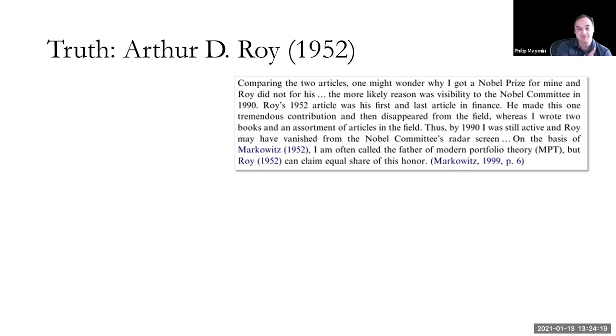And Markowitz later reflecting on it says, comparing the two articles, this is a lesson for everybody here who does research, by the way. Comparing the two articles, one might wonder why I got a Nobel Prize for mine, and Roy did not for his. He says the most likely reason is visibility to the committee in 1990, 40 years later. Roy's 1952 article was his first and last article in finance. He made this one tremendous contribution and disappeared from the field, whereas I kept writing. He's a very gracious person. He says, I'm often called the father of modern portfolio theory, but Roy can claim equal share of dishonor.